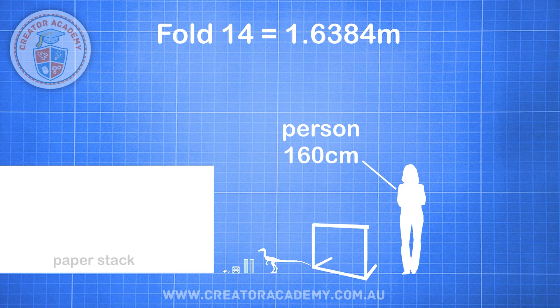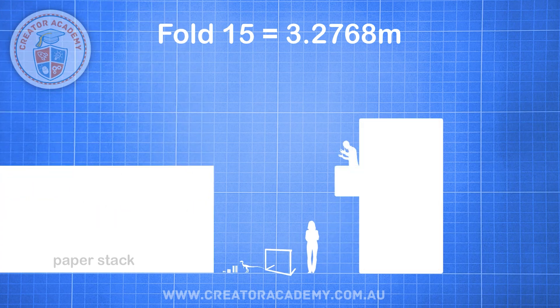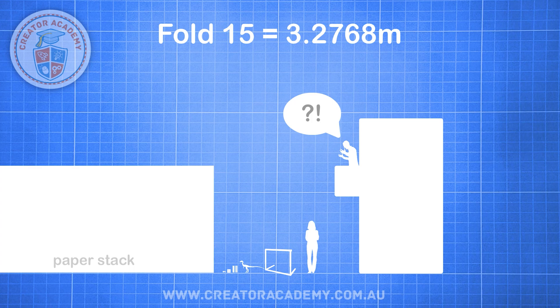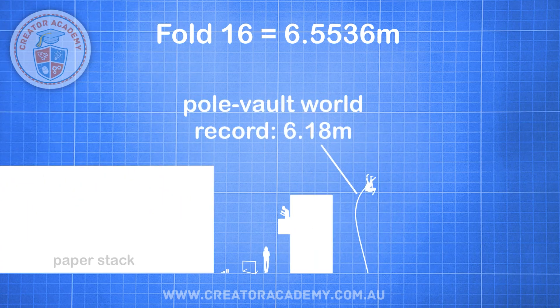Fold 15 is where you begin to think this paper folding business is getting out of hand, because the stack is now 3.2 metres high — about the distance separating you from your upstairs neighbour as you scream at each other about this massive paper stack growing in the middle of the street. 'It's for science,' you explain. 'I'll recycle everything afterwards.' Have you subscribed to my channel yet? Fold 16 doubles the stack height to 6.5 metres, and your neighbour calls the police because it's now higher than the pole vaulting world record.